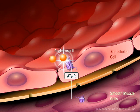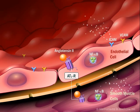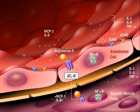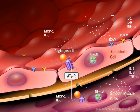Angiotensin II activates the pro-inflammatory transcription factor nuclear factor kappa B in human monocytes, human smooth muscle cells, and human endothelial cells. Activated nuclear factor kappa B leads to the increased production of cellular adhesion molecules VCAM, ICAM, and pro-inflammatory cytokines IL-1 and IL-6, TNF-alpha, and chemokines such as monocyte chemoattractant protein 1 (MCP-1) and IL-8.